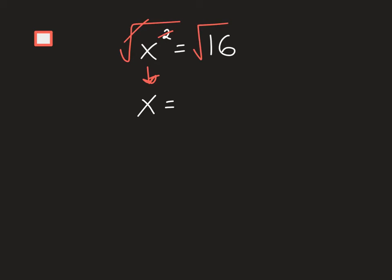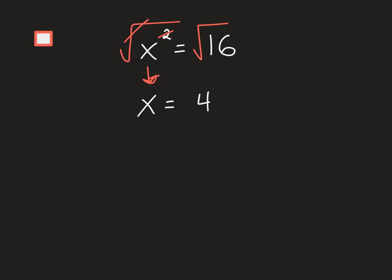I want to point out a common mistake here. People sometimes say the square root of 16 is 8 — but it's not. They're thinking of 16 divided by 2, which isn't correct. When we take the square root, we're asking: what times itself gets me to 16? And 4 times itself gets you to 16. That's an answer — but it's actually not the only answer.